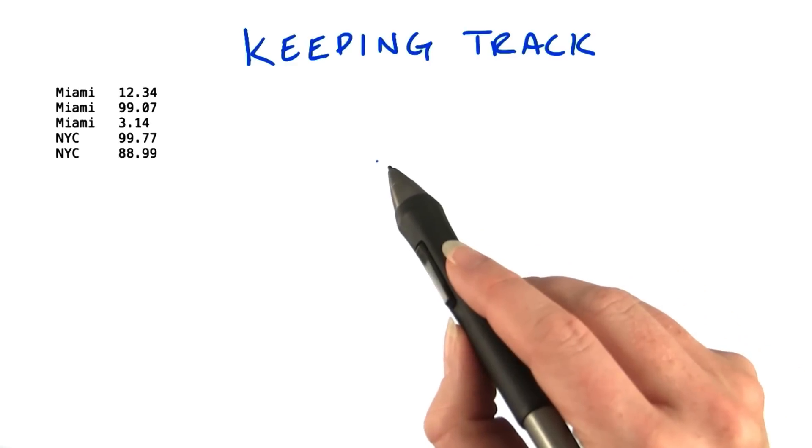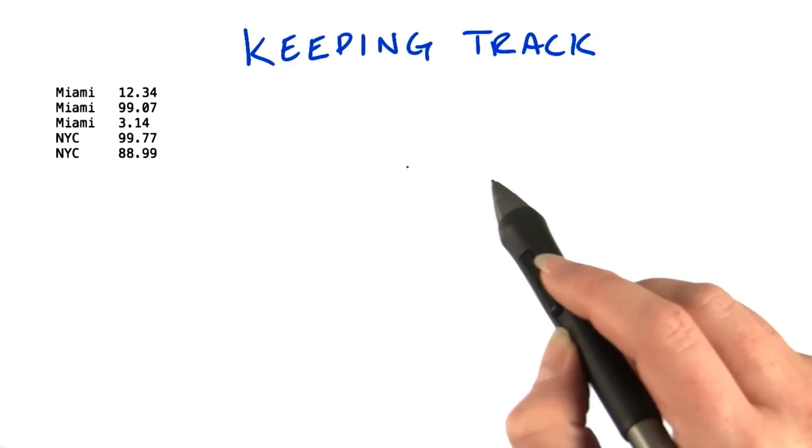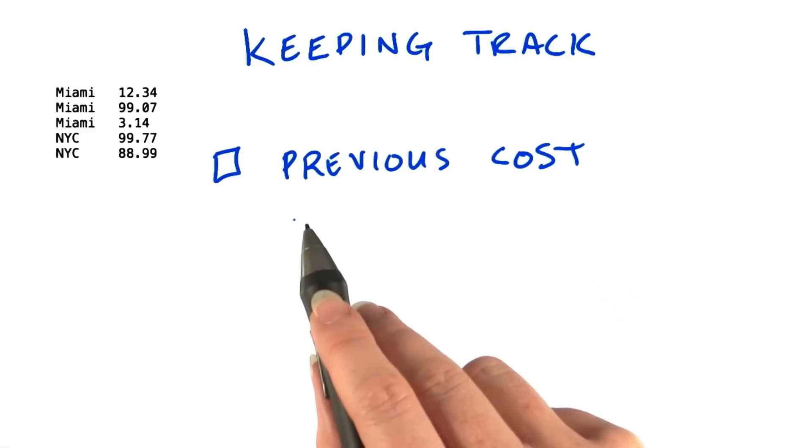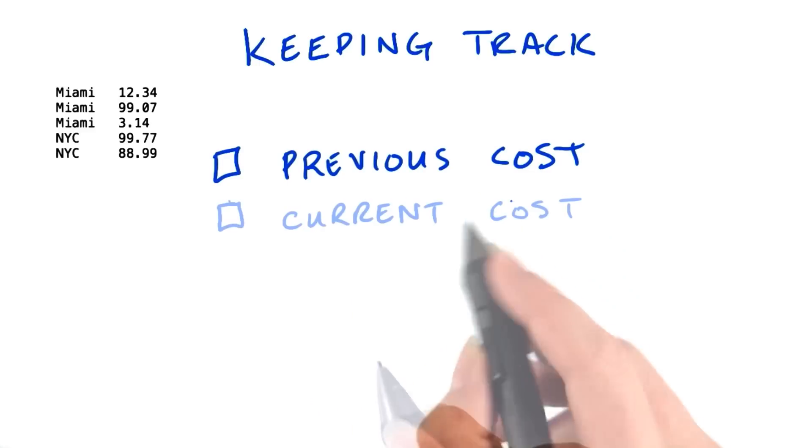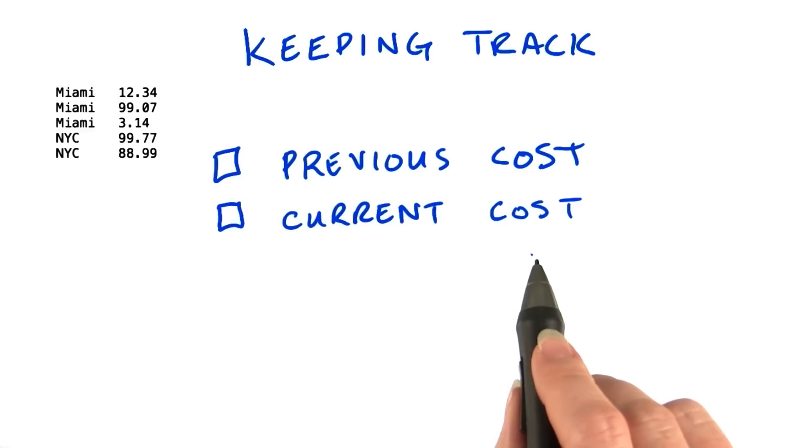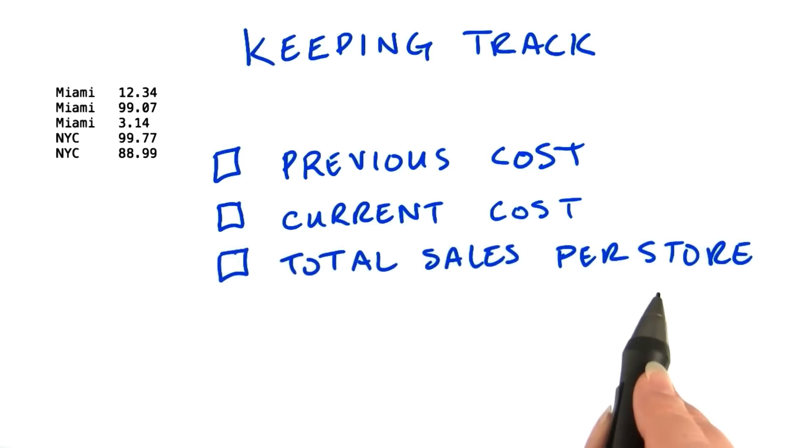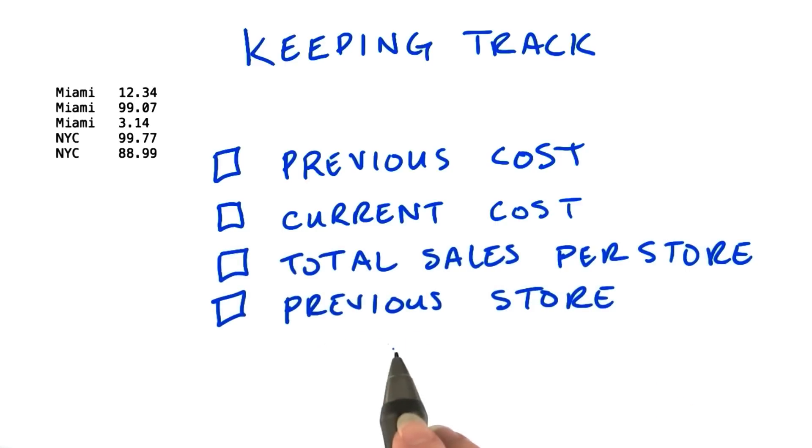what variables might we need to keep track of to calculate the total sales per store? Do we need to know the cost of the previous line? Do we need to store the current cost? Or how about the total sales per store? Do we need to save the previous store? Or the store that we're currently working with?